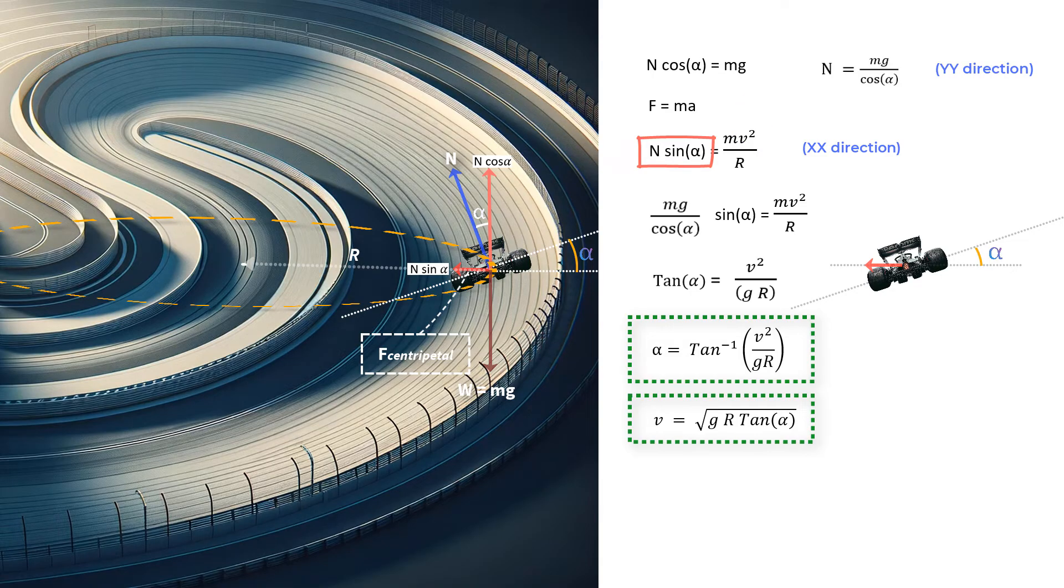That is, for a given value of this centripetal force, there is a corresponding velocity on the right-hand side that will give you this equality. And if you go beyond that velocity, this centripetal force will not be able to keep the car on track. That is, you will need more centripetal force if you wish to speed further.